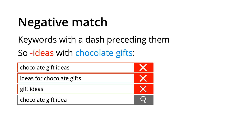This brings us to our final keyword match type: negative match. Adding negative keywords is an important part of optimizing campaign performance — it's especially important if you use broad match keywords. A negative match keyword prevents your ads from being displayed, reducing less relevant impressions. For example, adding the negative keyword ideas means people searching for chocolate gift ideas or gift ideas won't see our ads. Note that negative keywords don't match close variants, so you need to add both singular and plural versions separately. You need to be precise with negative keywords.